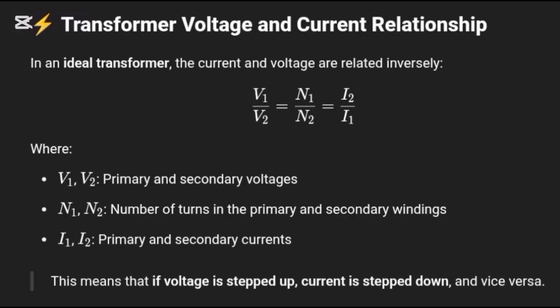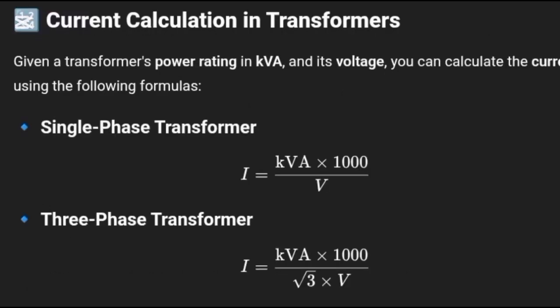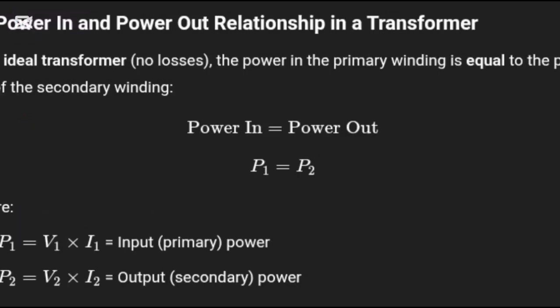V1 over V2 equals N1 over N2 equals I2 over I1. This means voltage is proportional to the number of coil turns. If voltage goes up, current goes down and vice versa. The power ideally stays the same.